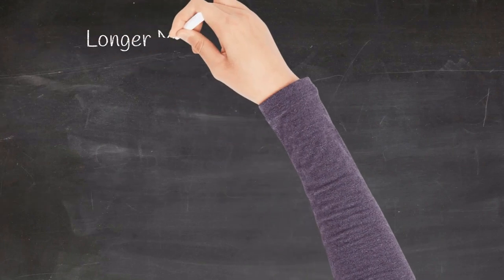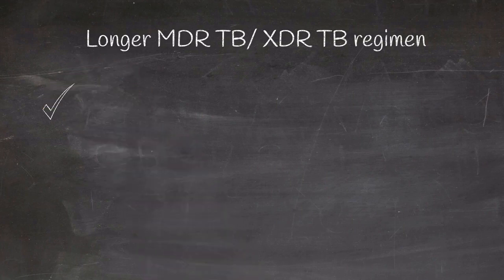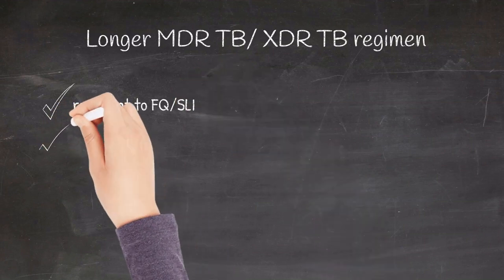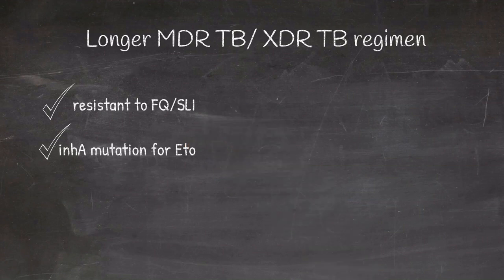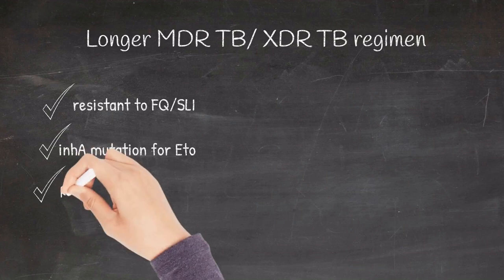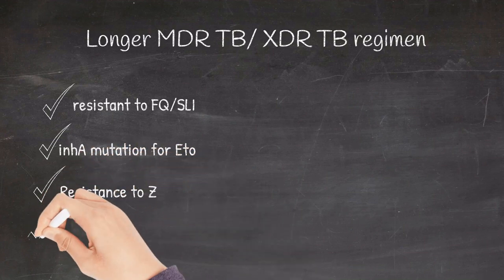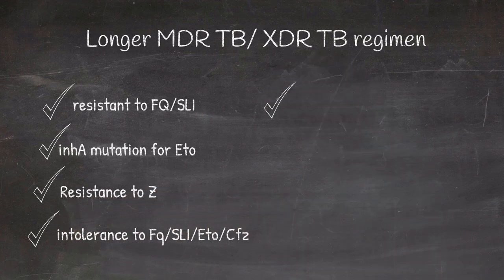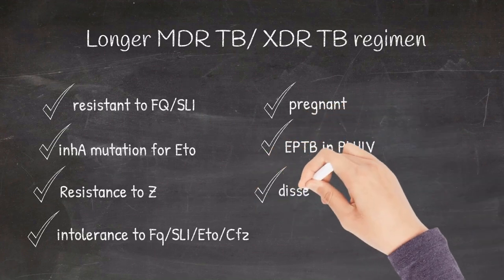Moving on to all oral longer MDR-TB regimen. The inclusion criteria for this regimen includes resistance to fluoroquinolones or second line injectable agents, inhA mutation for ethionamide. Please note that inhA mutation is common for ethionamide resistance also. Resistance to pyrazinamide, intolerance to fluoroquinolones and second line injectables, pregnancy, extrapulmonary TB in patients who are HIV positive, and disseminated tuberculosis.